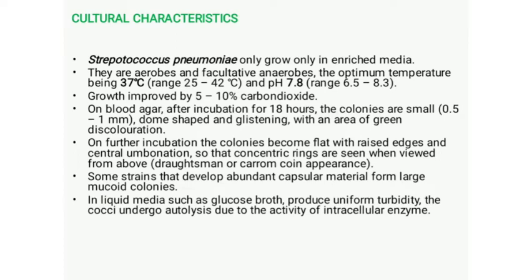Growth is enhanced by 5 to 10% carbon dioxide. On blood agar after 18 hours incubation, they produce small dome-shaped glistening colonies with an area of green discoloration indicating alpha hemolysis. On further incubation, colonies become flat with raised edges and central umbonation, showing concentric rings when viewed from above — known as the draughtsman or carom coin appearance. In liquid media they grow as uniform turbidity and undergo autolysis.